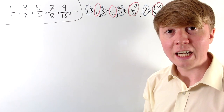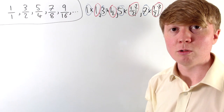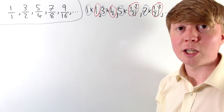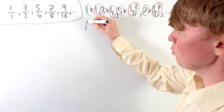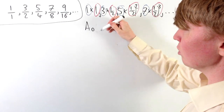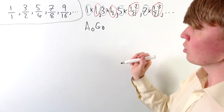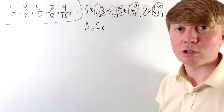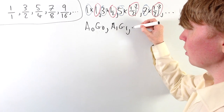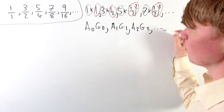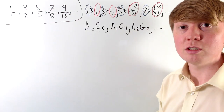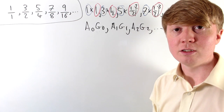We call this type of sequence an arithmetico-geometric sequence, as it contains some structure of an arithmetic and some structure of a geometric sequence. We could write the terms as a₀·g₀, then a₁·g₁, then a₂·g₂, and so on — each time multiplying the corresponding terms of an arithmetic and a geometric sequence.